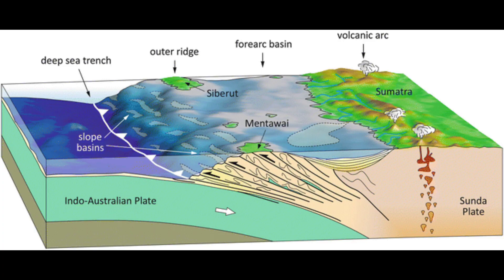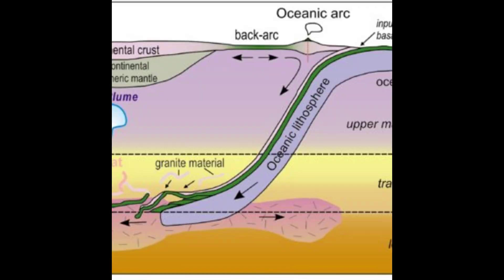The processes of offscraping and underplating work together and rotate rock layers and structures to steeper orientations. In this way, rock layers rotate from an orientation that is near horizontal at the toe of the wedge to near vertical at the back of the wedge.